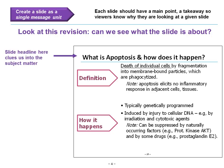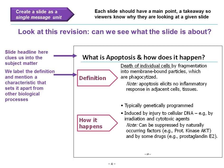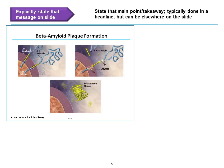Now let's take a look at the revision. The slide headline cues us into the subject matter: what is apoptosis and how does it happen? We label the definition and mention a characteristic that sets it apart — death of individual cells by fragmentation into membrane-bound particles — and note that apoptosis elicits no inflammatory response. We specifically state what drives the process and what can suppress it: it's typically genetically programmed but also induced by injury, and it can be suppressed by naturally occurring factors. Now we have a headline that clues us into the subject matter, and we can see the entirety of what the slide is trying to accomplish.